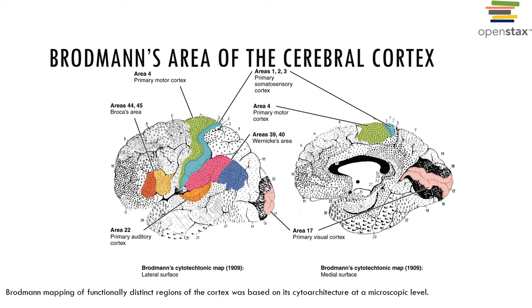Broca's area, also known as the speech center, is located anterior to the lower part of the premotor cortex. It is involved in directing motor speech, including thinking about or planning to speak, and is generally present in only one hemisphere, typically the left. The frontal eye field is located anterior to the premotor cortex and superior to Broca's area. This region controls voluntary movements of the eye and has no role in the interpretation of visual stimuli.